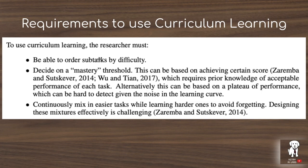Similarly, in the maze navigation tasks, some tasks are just a single room requiring two grid-world steps to reach the objective, compared to tasks with multiple rooms, lava, walls, and other obstacles that make them more difficult. The next requirement is to decide on a mastery threshold — a certain level of skill on the easier task before moving up to a more challenging one.